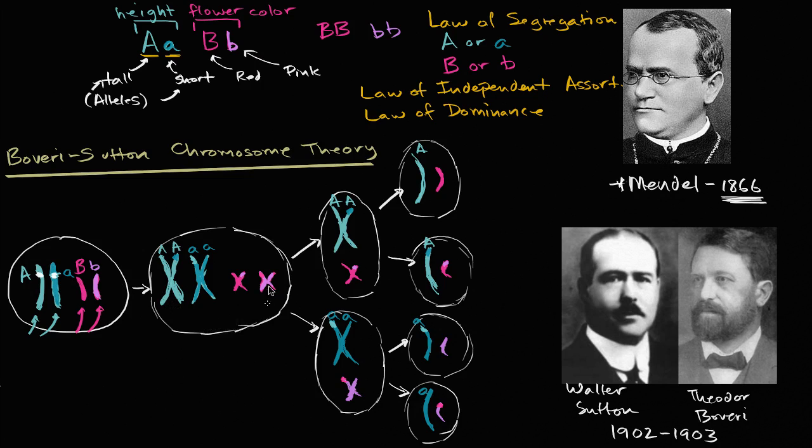Maybe chromosomes code for multiple of these heritable factors that segregate and independently assort. And as we know now, they were right. So this was a very, very big deal. But it's important to realize that they weren't sure. They established the theory, they were able to make some observations with the grasshoppers and the sea urchins, and they saw the patterns between what Mendel was describing and the way chromosomes behave during meiosis. And then they know that each of these products of meiosis, each of these gametes will then go and form with other gametes to form the next organism.